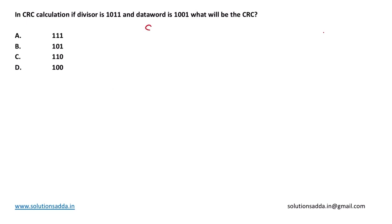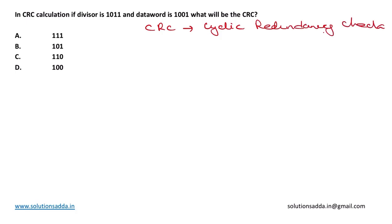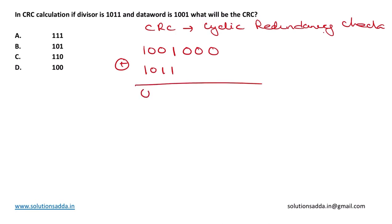CRC stands for Cyclic Redundancy Check. The procedure to find the CRC is to perform XOR operation of the data word with the divisor. The data word given is 1001 and the divisor is 1011. Since it is a polynomial of order 3, we will append 3 zeros at the end and then perform the XOR operation.